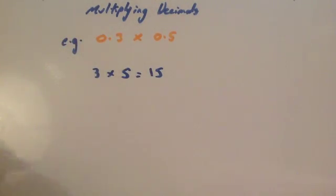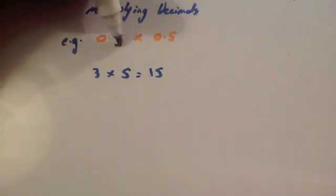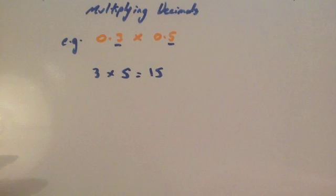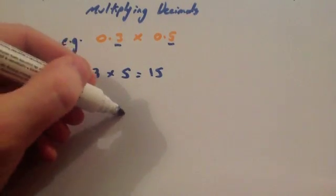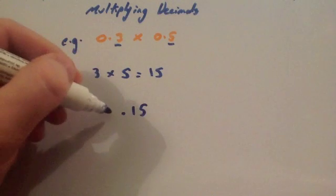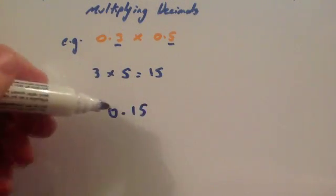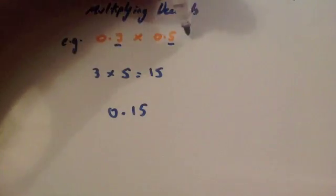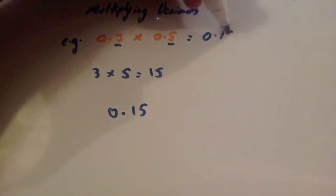Step two: count the number of digits after the decimal points in the question. This digit is after a decimal point, and this digit is after a decimal point. So in the question I have two digits after the decimal point. Therefore in my answer I must have two digits after the decimal point. So I put the decimal point so that 1 and 5 come after it, giving 0.15. The answer to 0.3 times 0.5 is 0.15.